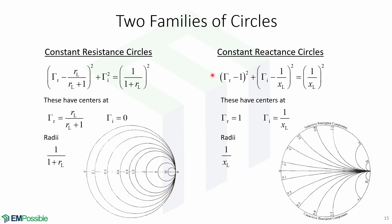For the second family of circles, we have the constant reactance circles from the imaginary part. The circles have centers at gamma R equals 1 and gamma I equals 1 over XL, and each circle has a radius of 1 over XL. The circles look like this.